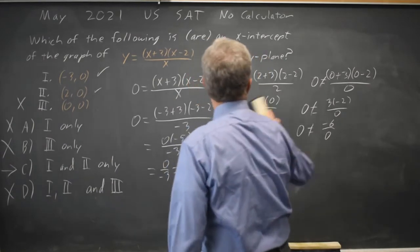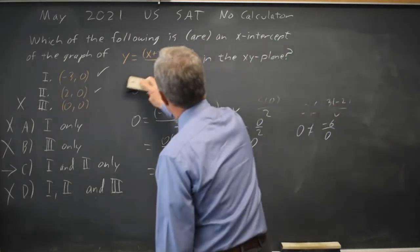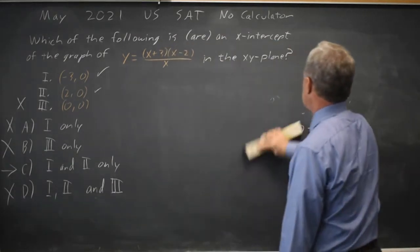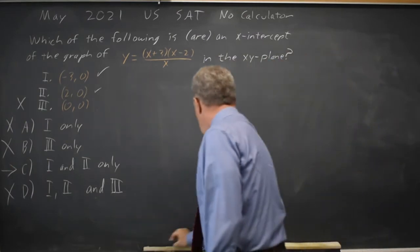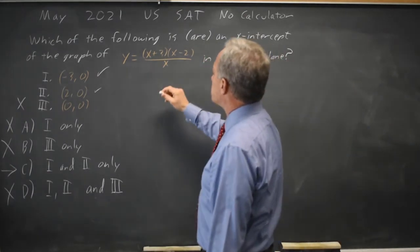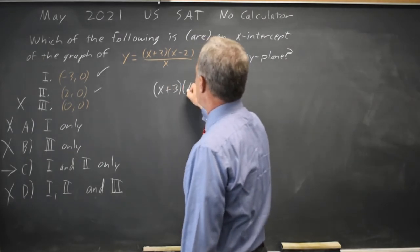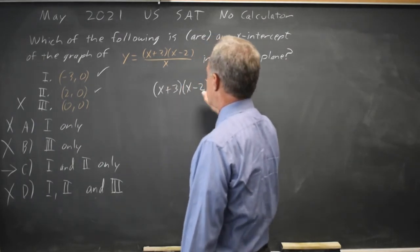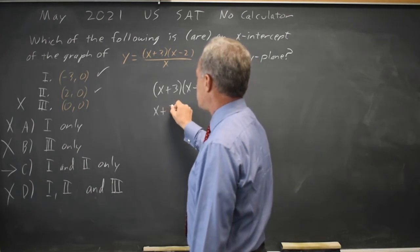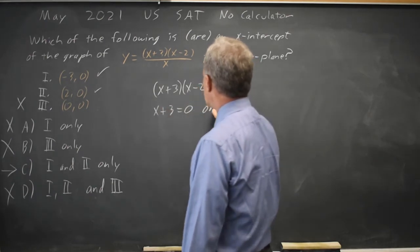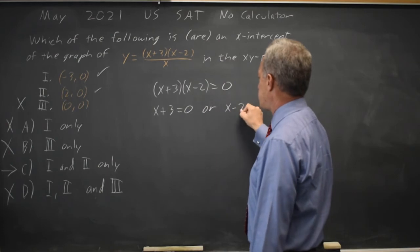Alternatively, we could have solved this by recognizing that a rational expression is 0 if the numerator is 0. So (x+3)(x-2) equals 0. Either the first factor is 0, x+3 equals 0, or the second factor is 0, x-2 equals 0.